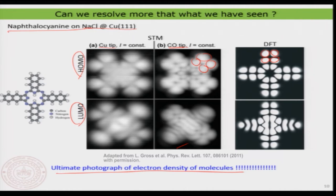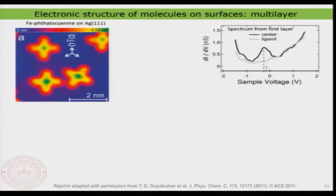That is the power of the technique — we are always doing this at a single molecule level. Now, we also want to understand the electronic structure as a function of layer thickness. So far, what I have shown is the electronic structure of the molecule sitting on the first layer. But now I want to take you to another perspective.